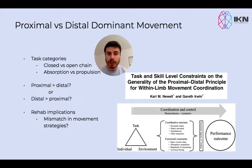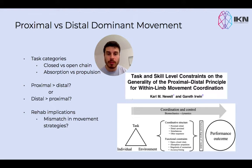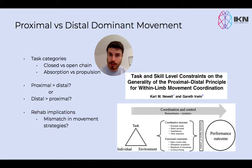The paper is called 'Task and Skill Level Constraints on the Generality of the Proximal to Distal Principle for Within Limb Movement Coordination.' It's really a paper that is very important to the approach that we take at IKM, because when we're assessing and rehabbing or loading the movement system of an individual, we do need to appreciate that it's not just about the individual's movement strategies, but it's about the appropriateness of those movement strategies within the context of the task.